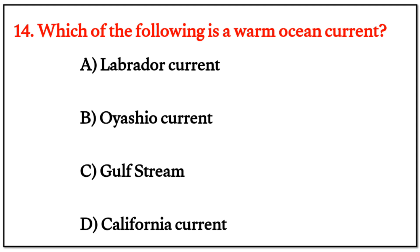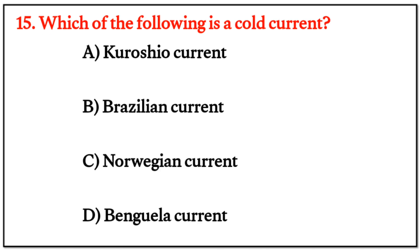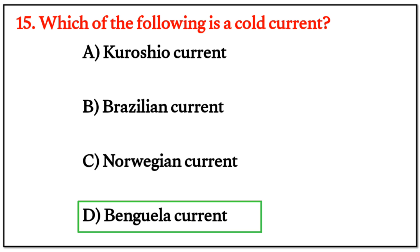MCQ Question 14: Which of the following is a warm ocean current? The right answer is C: Gulf Stream. Question 15: Which of the following is a cold current? The right answer is D.